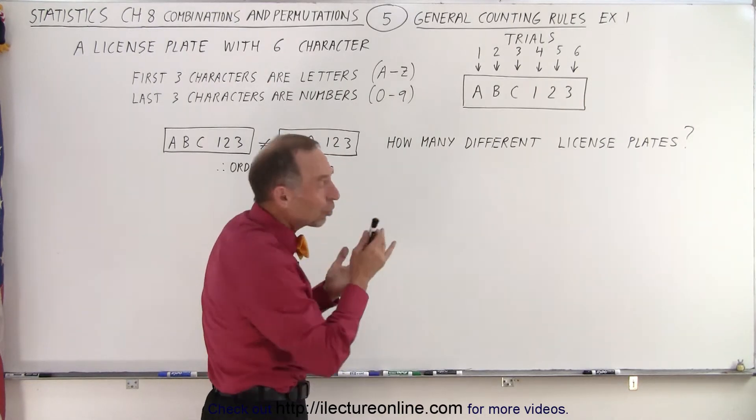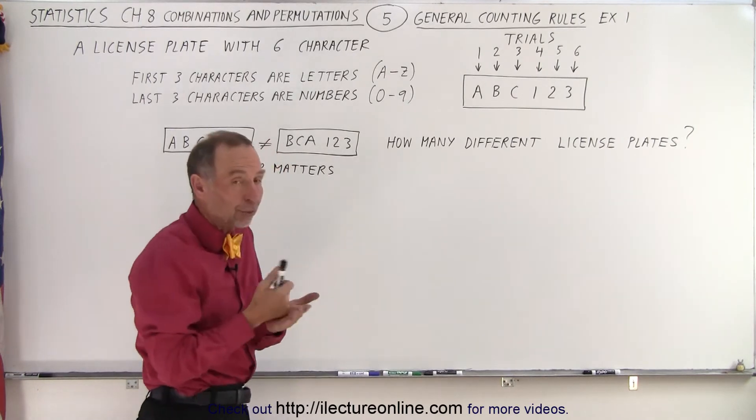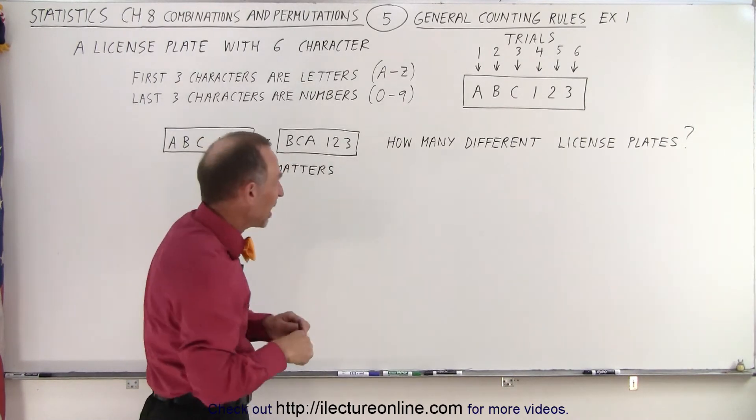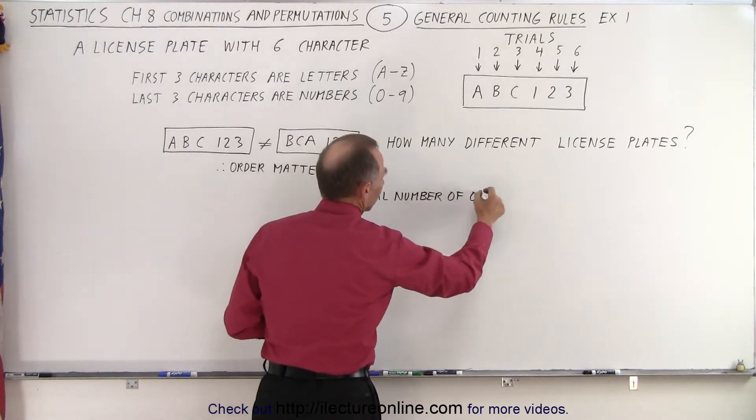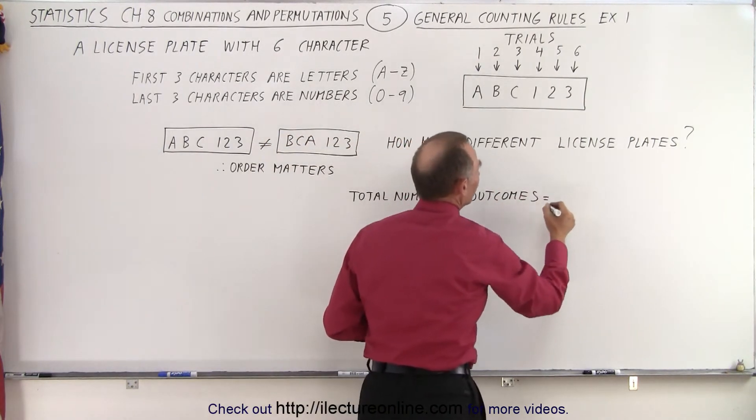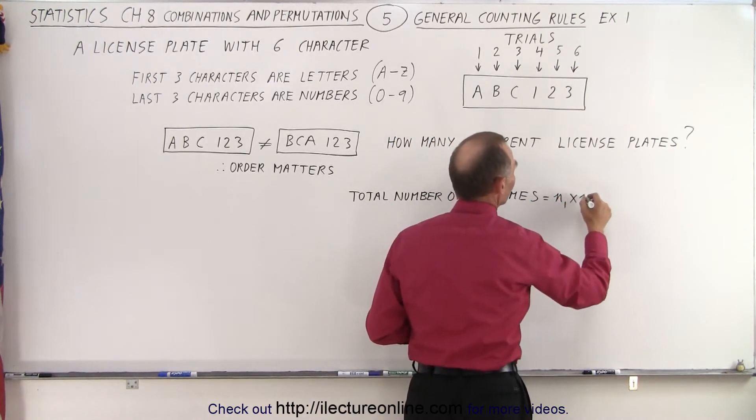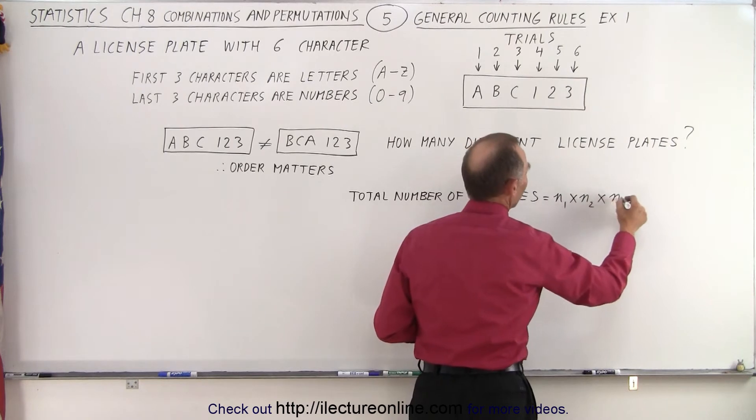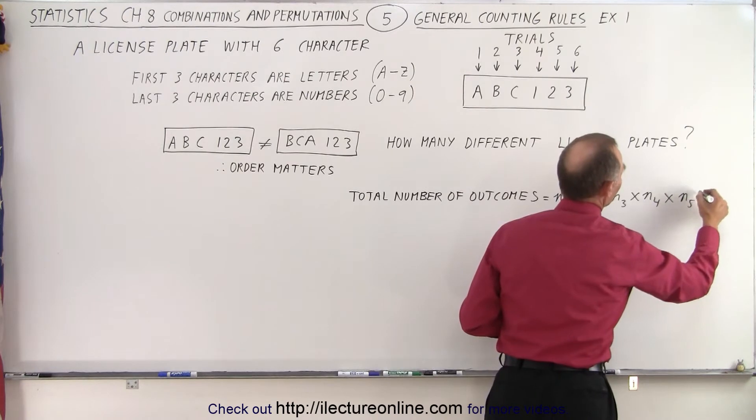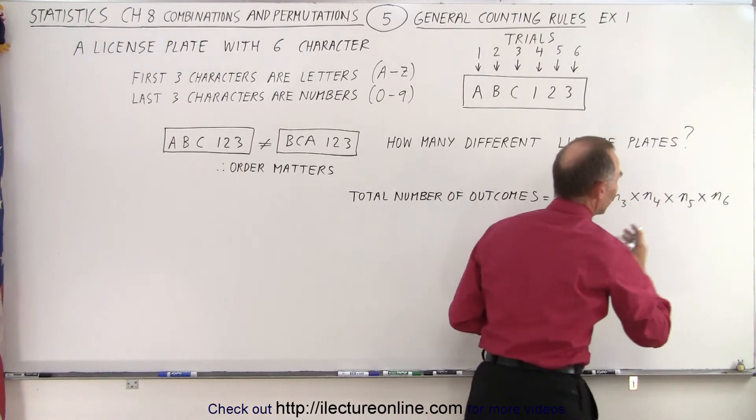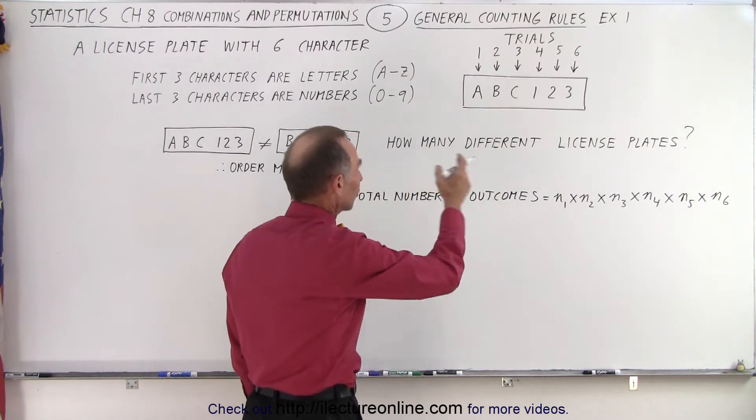So we can call each one of those characters a trial and then we have to determine how many outcomes there are for each trial and then we have to realize that the total number of outcomes is going to be equal to the product of all the outcomes. So it's n₁ times n₂ times n₃ times n₄ times n₅ and times n₆. We're simply going to multiply all the different outcomes for each of the trials for each of the characters.